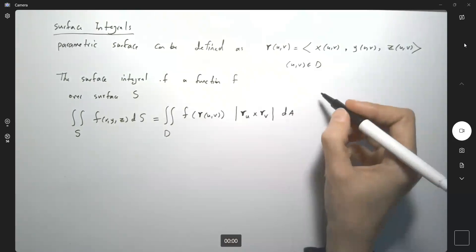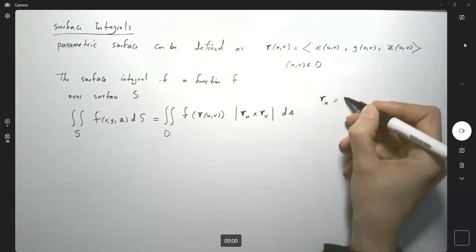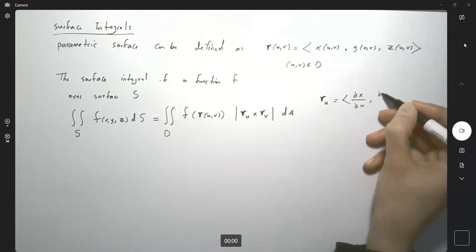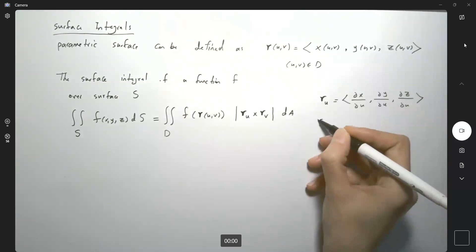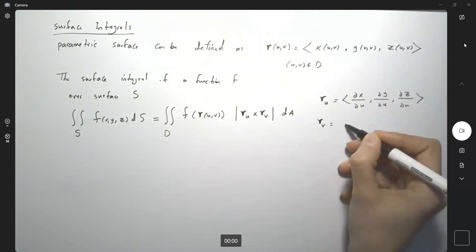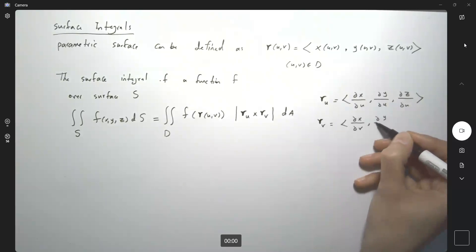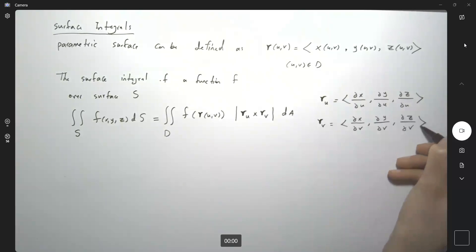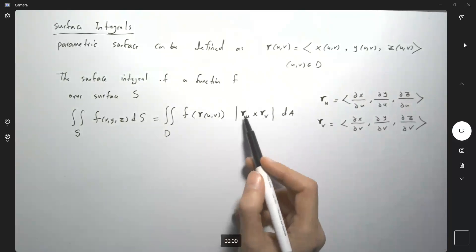r_u is the vector of partial derivatives of x, y, and z with respect to u. r_v is the vector of partial derivatives of x, y, and z with respect to v. You're finding the cross product and then its magnitude.